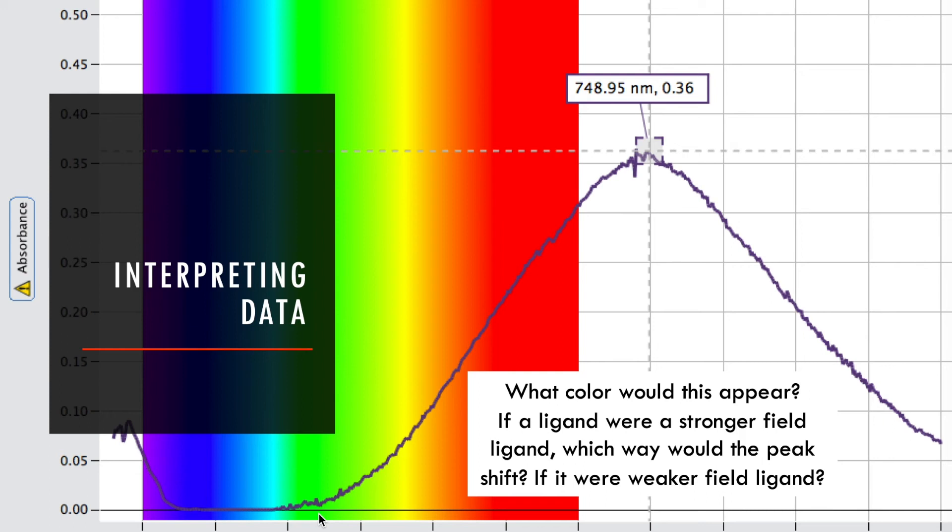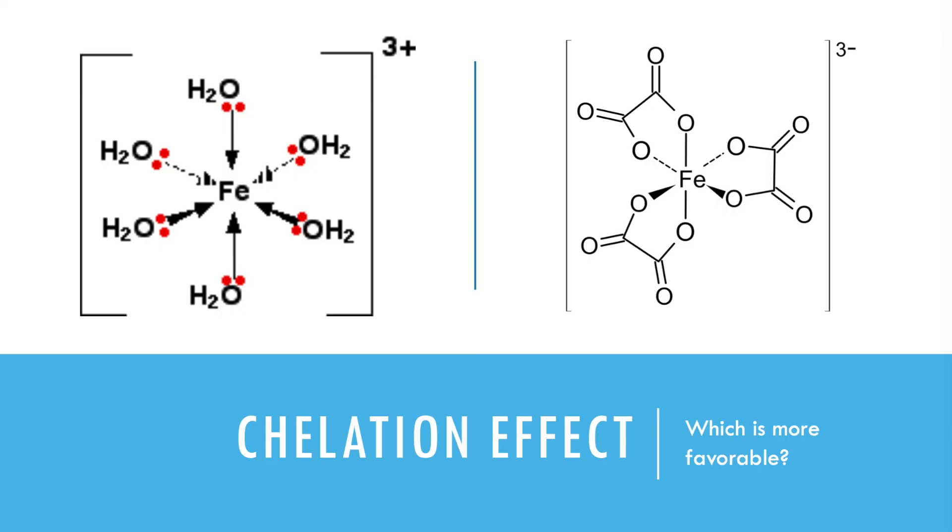Okay, if we had a stronger field ligand, then we would expect that it would result in a higher energy difference between the d-orbital levels. And so the energy of the light that is absorbed would be higher. And if the energy of the light is higher, it would move from the red towards the blue to higher energies, and so it might be shifted to the left. If we had a weaker field ligand, it might be shifted to the right towards lower energies.